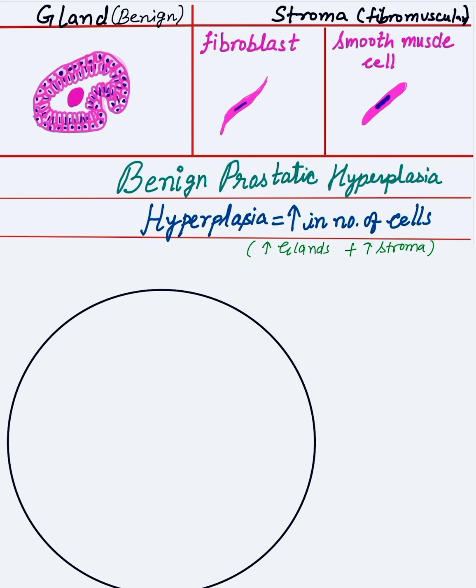The fibrous component is composed of fibroblasts and smooth muscle cells, both of which are spindle-shaped cells with little variation in morphology. Fibroblasts are spindle-shaped with pointed ends and an elongated nucleus. Smooth muscle cells are also spindle-shaped but have rounded ends, and the nucleus is elongated with rounded ends — sometimes called a cigar-shaped nucleus. In the stroma you draw these two kinds of cells: fibroblasts and smooth muscle cells. The glands are very similar to the glands of normal prostate; the only difference is that in BPH the glands are increased in number and cystically dilated.